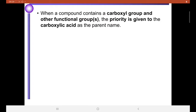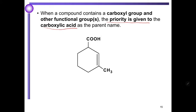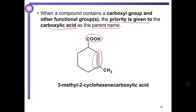When a compound contains a carboxyl group and other functional groups, the priority is given to the carboxylic acid as the parent name. We look at the example with a carboxylic acid and a carbon-carbon double bond. The priority is given to the carboxylic acid as the parent name. The structure is named as 3-methyl-2-cyclohexene carboxylic acid.